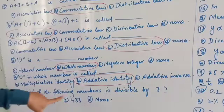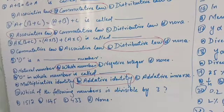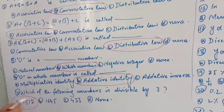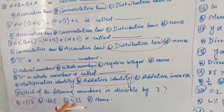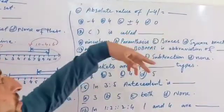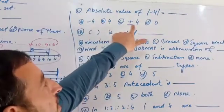The number of the number is divisible by 3. The number of the number is divisible by 3. The number is 0.